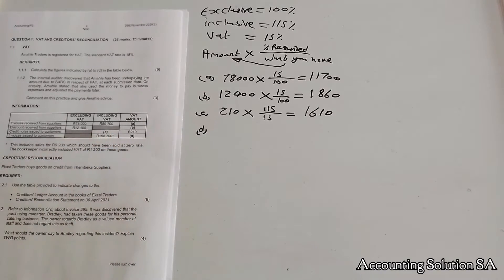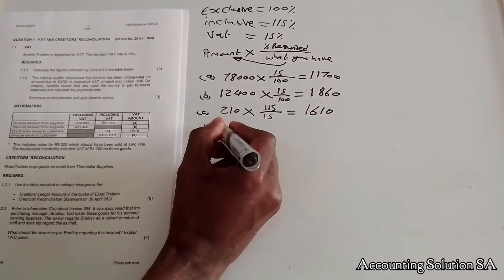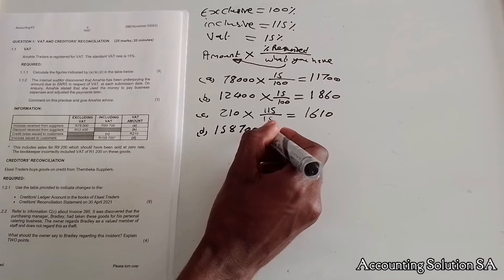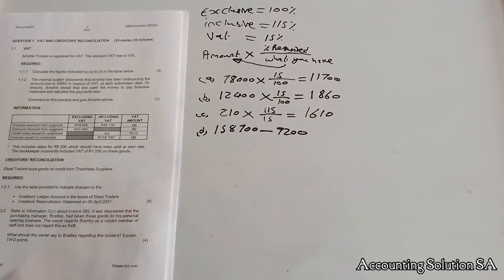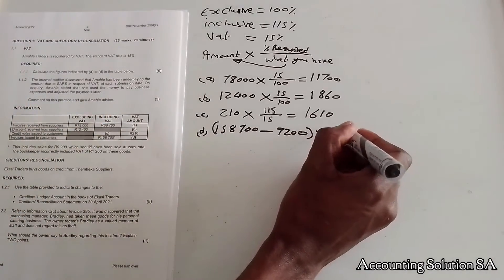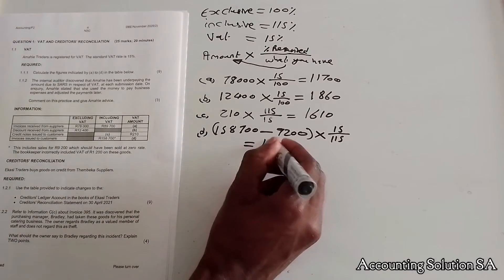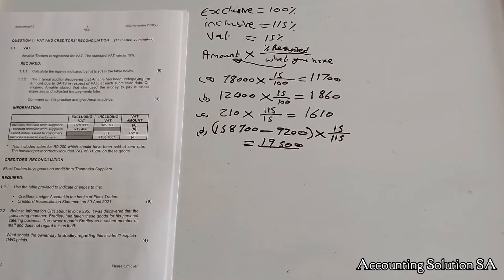For figure D, there is a note: this includes sales of 9,200 which were sold at zero-rated. You know that if something is zero-rated, we don't calculate VAT on it. So you must first take 188,700 and subtract the zero-rated amount of 9,200. After you get that answer, you then multiply by — you have inclusive, you are looking for VAT, so you use 15 over 115. It gives you an amount of 19,500.